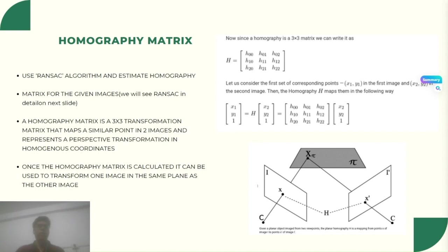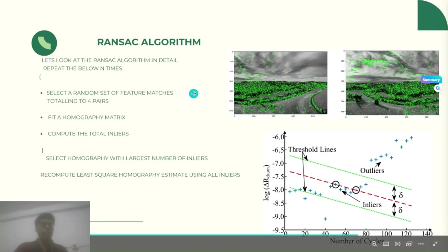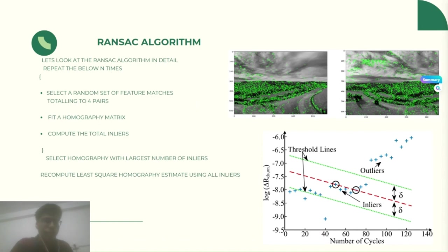Next we will be looking at the RANSAC algorithm, which will help us calculate very accurately the homography matrix. RANSAC algorithm essentially will be selecting a set of feature matches totaling to four pairs. Then we will be fitting the homography matrix and calculating the total number of inliers. These steps will be repeated n times. After repeating these steps for a certain number of times, we will finally select the homography matrix with the largest number of inliers. The homography matrix with the highest number of inliers will be the most accurate. The RANSAC algorithm essentially helps us calculate the homography matrix in a more accurate manner.